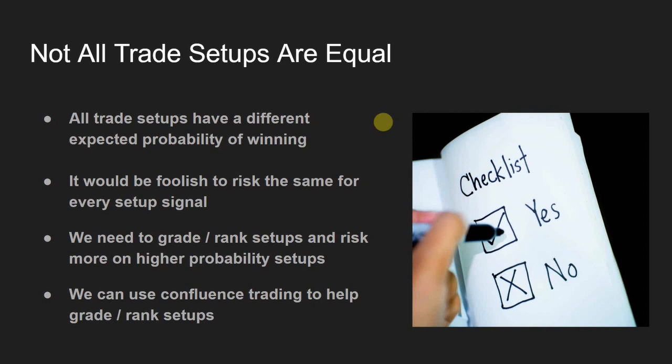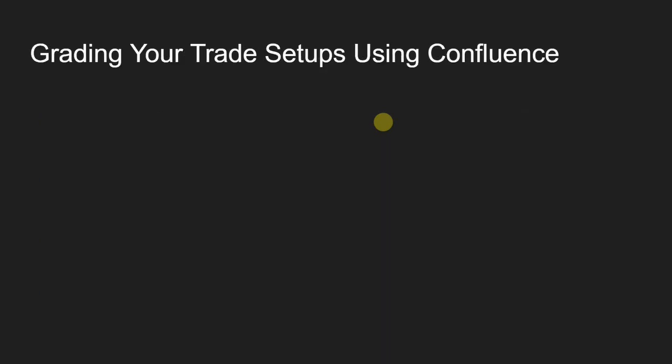It got me thinking about confluence and how we should be risking different amounts depending on the number of confluence indicators present. I've developed a grading or ranking system: if something has three or more confluence factors, I will risk more on the trade than if something only has zero to one confluence factor. I'm not saying I don't take the trade if it only has one - if it just had a MACD crossover and nothing else, I will still take the trade, but I'll put a lower risk size on it.